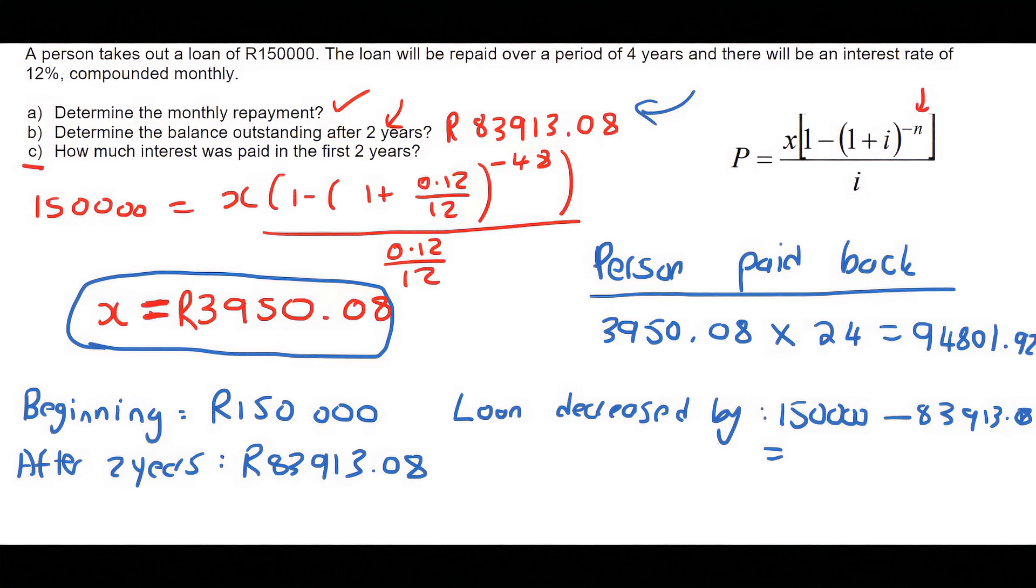So I'm just typing on my calculator. The loan has gone down by 66,086 Rand and 92 cents.